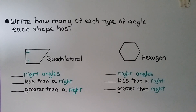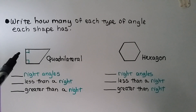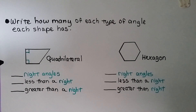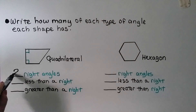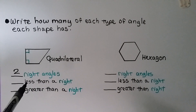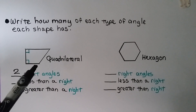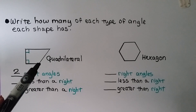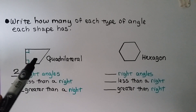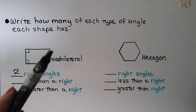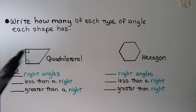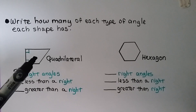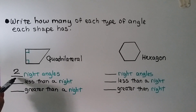Now let's write how many of each type of angle each shape has. This quadrilateral has four sides — one, two, three, four. The little boxes tell us there are two right angles. Looking at the other angles: one is greater than a right angle — making a square corner shows it's more open — and one is less than a right angle, more closed than a square corner. So we have one less than right and one greater than right.